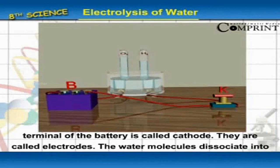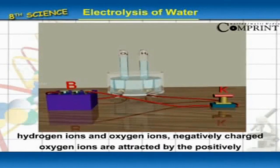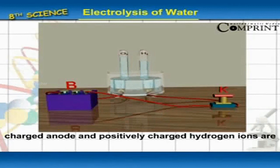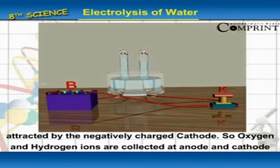The water molecules dissociate into hydrogen ions and oxygen ions. Negatively charged oxygen ions are attracted by the positively charged anode and positively charged hydrogen ions are attracted by the negatively charged cathode.